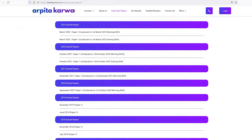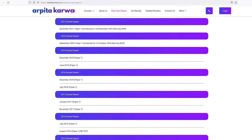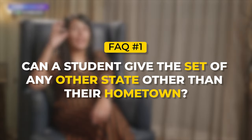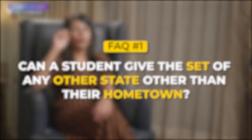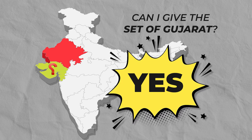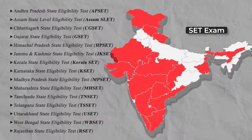We are going to talk about two frequently asked questions. First: can a student give the SET exam of any state other than their own hometown? For example, if I am a student from Rajasthan, can I give the SET exam of Gujarat? The answer is yes — I can apply for Gujarat SET, Maharashtra SET, Kerala SET. In fact, I can give as many state SET exams as I want, irrespective of whether it is my home state or not.